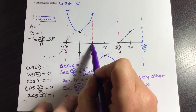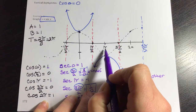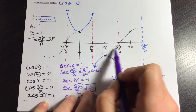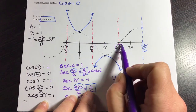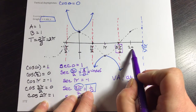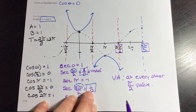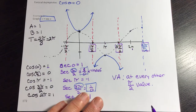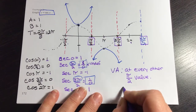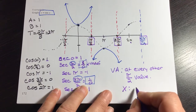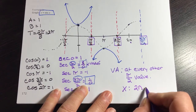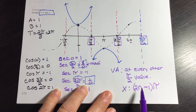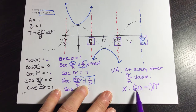So the vertical asymptotes happen at every other π/2 value — the odd ones. Here's π/2, then 2π/2 (even, not an asymptote), 3π/2 (odd, asymptote), 4π/2 (even, not an asymptote), 5π/2 (odd, asymptote). Another way to write that is x = (2n − 1)·(π/2), where to get an odd number, I multiply n by 2 to get an even number and subtract 1. So that was a quick introduction to secant graphs.